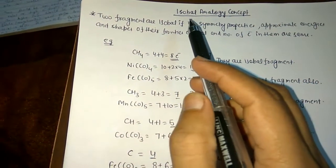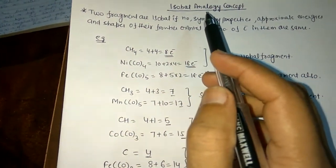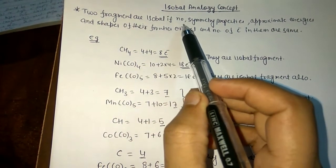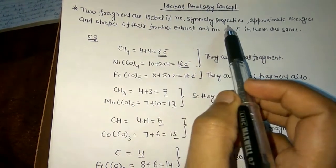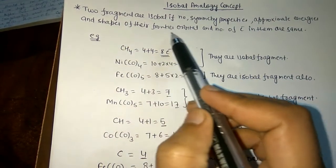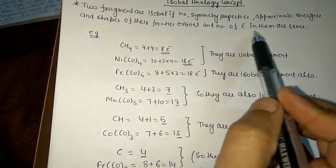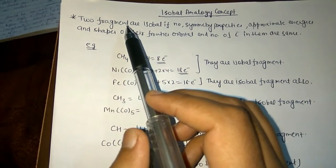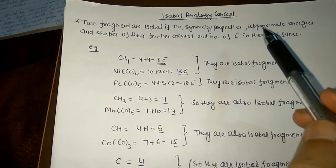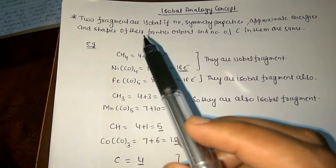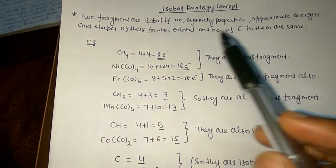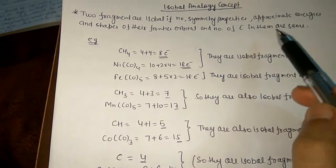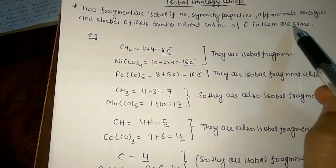Today we will discuss the concept of the isolobal analogy. According to this concept, two fragments are isolobal if the number, symmetry properties, approximate energy and shape of their frontier molecular orbitals, and the number of electrons in them are the same. So we can say that two fragments are isolobal if the approximate energy, shape of their frontier molecular orbitals, and number of electrons in them are the same.